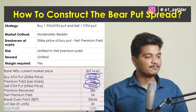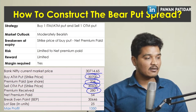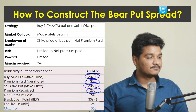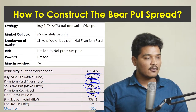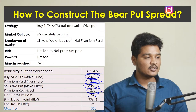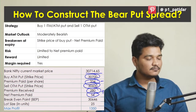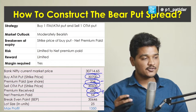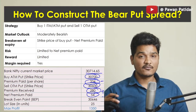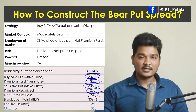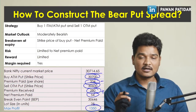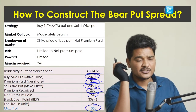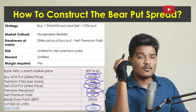Selling the 30,600 put gives us a credit of 280 in our account. Net premium paid is 334 minus 280, which equals 54 rupees per quantity. To convert to lot size, multiply by 25. The break-even point is 30,646. If we apply this strategy, the maximum net profit will be 13,050 rupees.